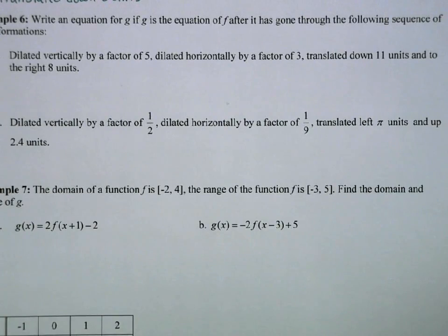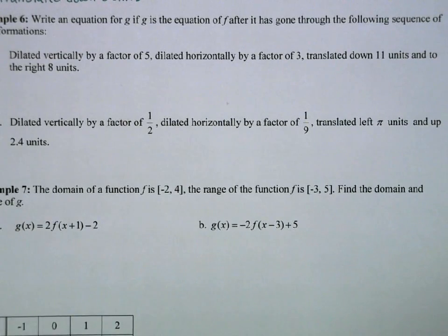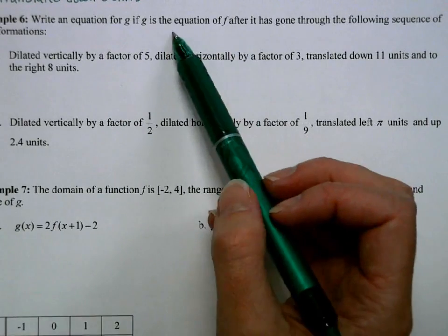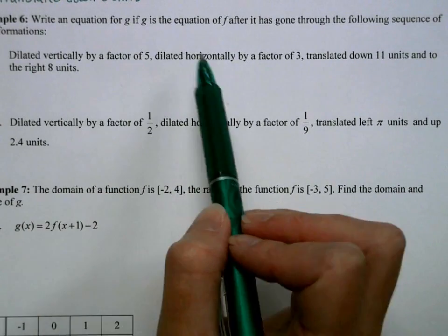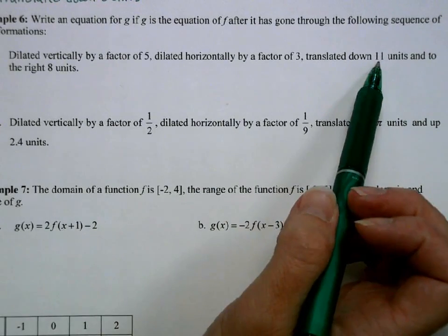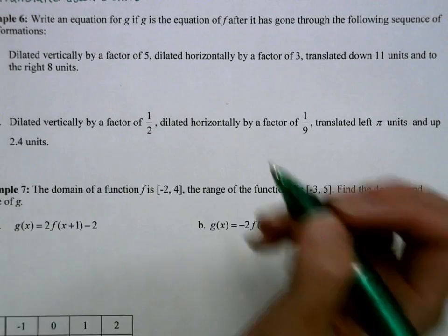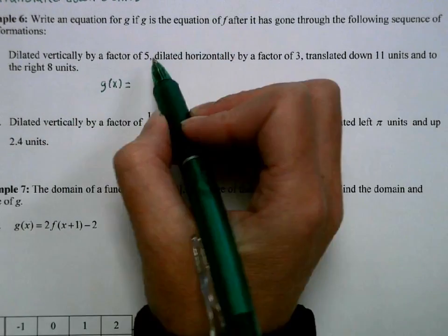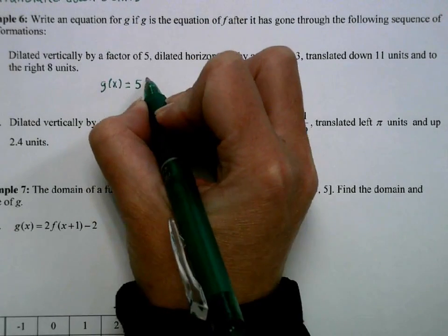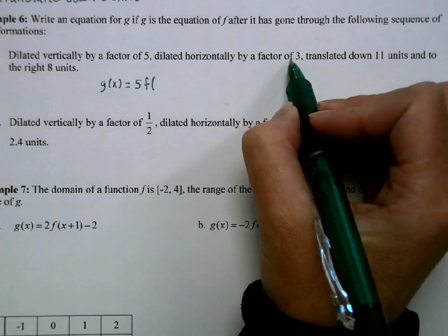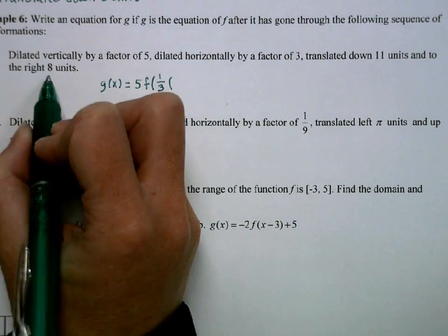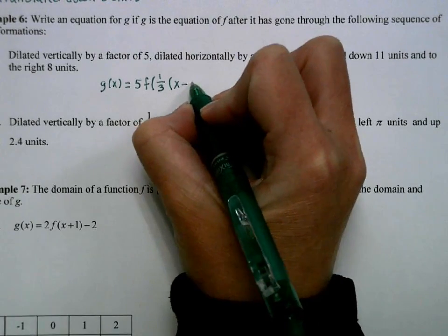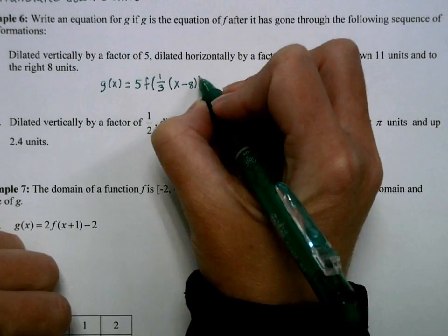Now we're going to go the other direction: given a list of transformations, we write the equation. We want to write the equation for g if it's constructed from f through: dilated vertically by a factor of 5, dilated horizontally by a factor of 3, translated down 11 units, and translated right 8 units. Dilated vertically by 5 means a 5 in front. Horizontally dilated by 3 means 1 third inside the parentheses. Translated right 8 gives x minus 8. Translated down 11 gives subtract 11 at the end.